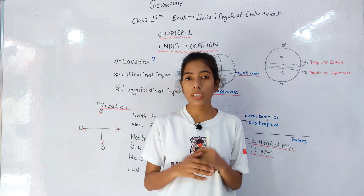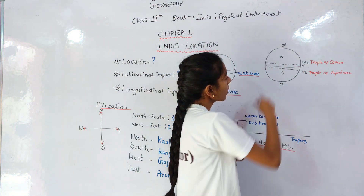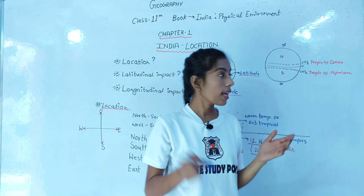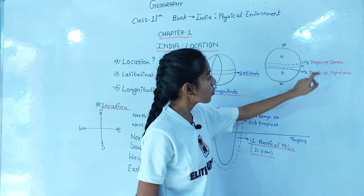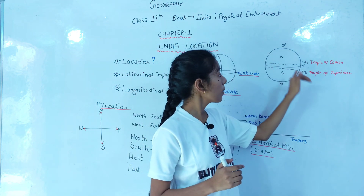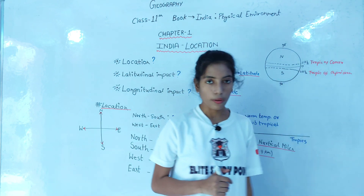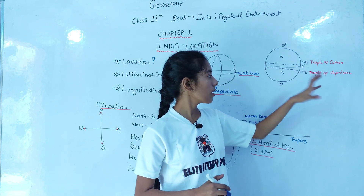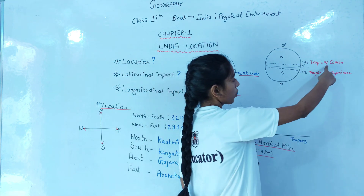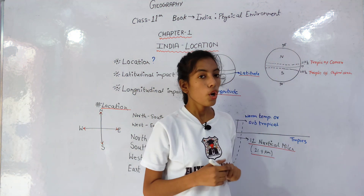Climate and vegetation are totally different from the tropical regions. For your general knowledge, you have to remember: this is the Tropic of Cancer, and this is the Tropic of Capricorn — 23 degrees north and 23 degrees south. And the poles are 90 degrees.